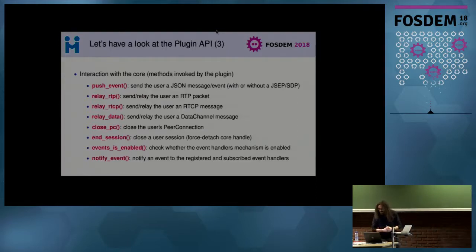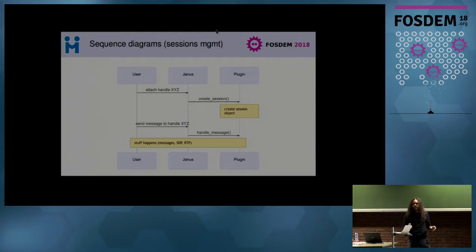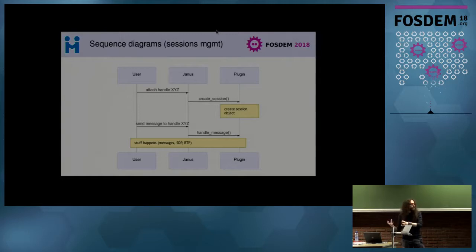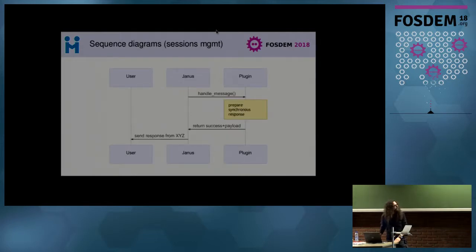From a sequence diagram perspective: the user attaches to a specific plugin by specifying the plugin namespace, a unique identifier. The Janus core uses the create-session callback to add the new user to the plugin, and then the plugin is responsible for tracking that user — perhaps creating a structure for a conference participant — and processing any messages sent from the browser.